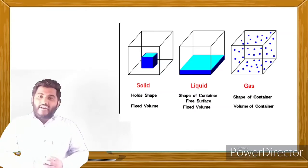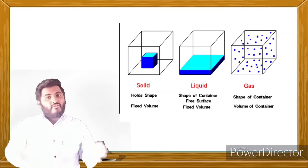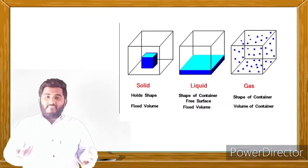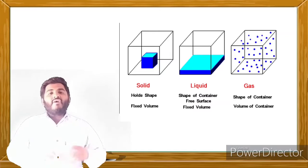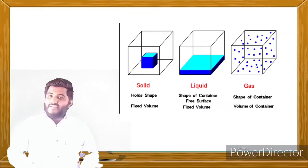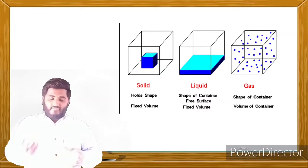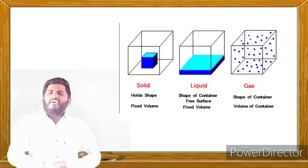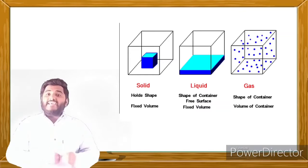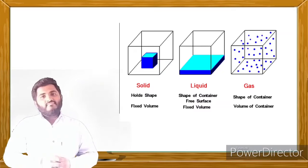Solids are characterized by definite shape, mass, and volume. Liquids do not have their own shape — they will take the shape of the container. Gases also do not have a definite shape and size, but gases have mass. Whenever you put gas into a container, it will settle in that container and take its shape. In gases, the constituent particles are very loosely bound.